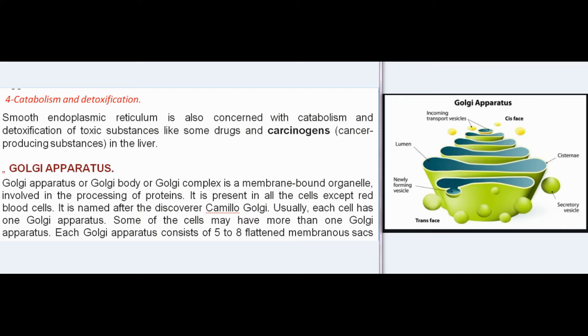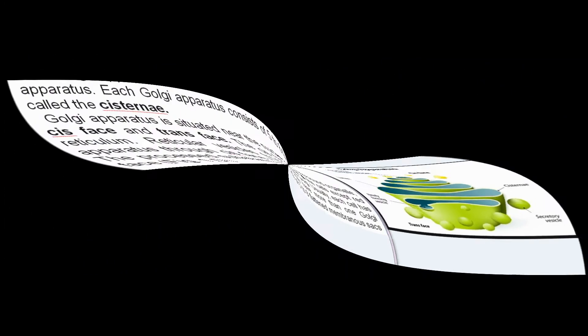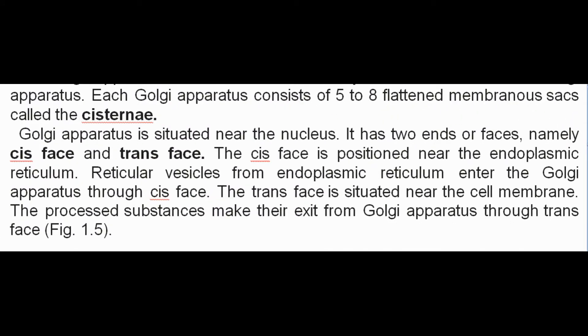Golgi apparatus, also called Golgi body or Golgi complex, is a membrane-bound organelle involved in the processing of proteins. It is present in all cells except red blood cells and is named after its discoverer Camillo Golgi. Usually each cell has one Golgi apparatus, though some cells may have more. Each Golgi apparatus consists of five to eight flattened membranous sacs called cisternae, situated near the nucleus. It has two faces: the cis-face positioned near the endoplasmic reticulum, and the trans-face situated near the cell membrane.